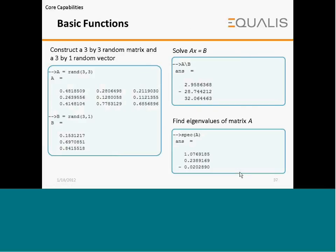Let's see some basic functions in SciLab. To construct a 3×3 random matrix and a 3×1 random vector, SciLab has different functions. The expression A = rand(3,3) generates a random matrix with three rows and three columns. To solve A·x = B, you can use A\B, which will give you the solution. To find the eigenvalues of matrix A, you can use spec(A), which will give the solution.